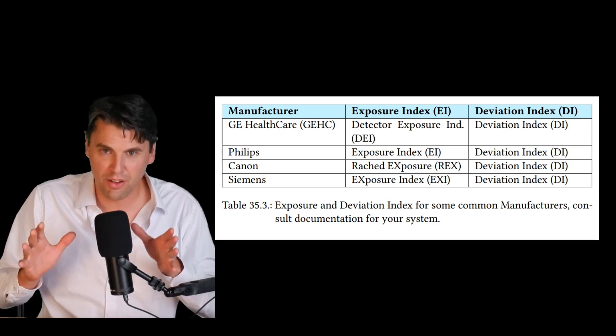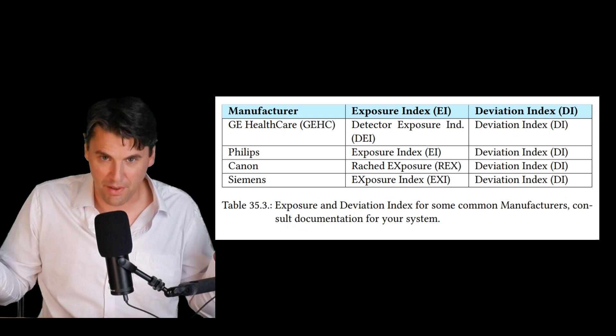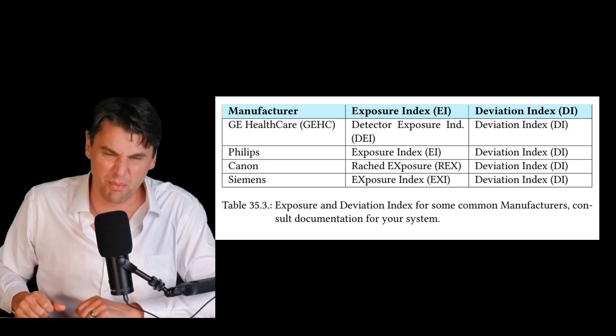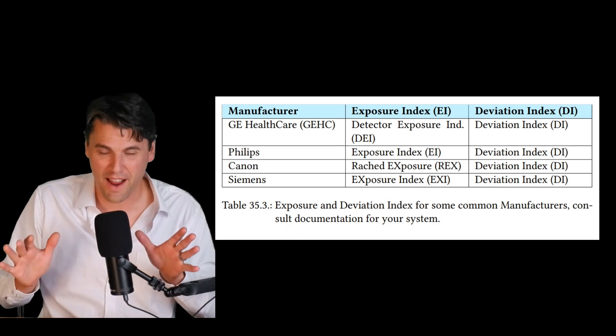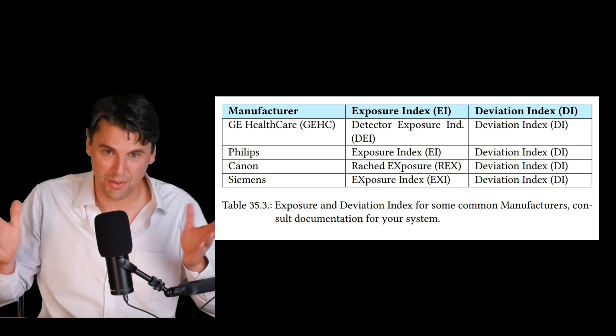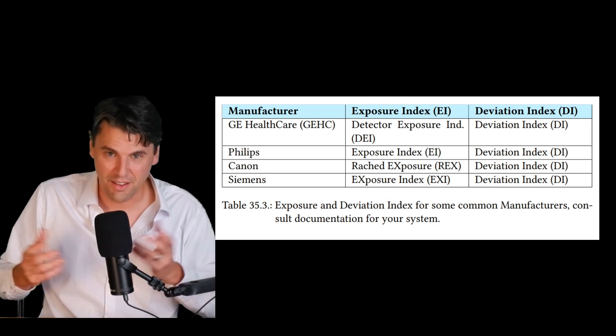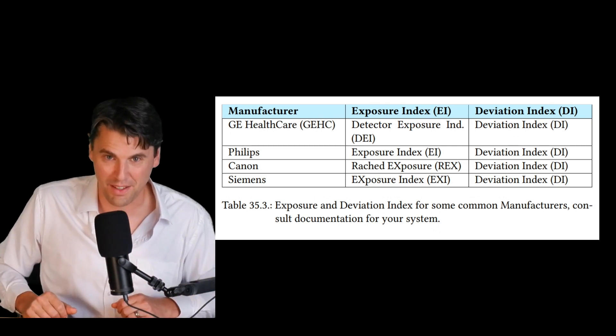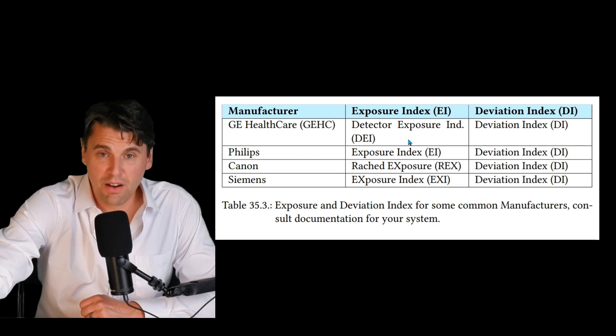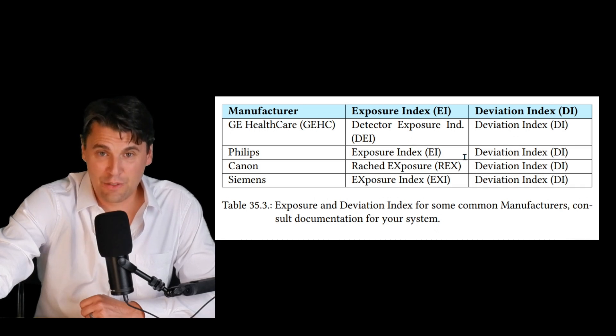Given that, the vendors all decided to make their own separate names, such that it would be nice and simple for you as a technologist to keep track of this. Instead of using just one naming convention, they've chosen to use separate naming conventions. GE Healthcare, it's called the DEI. That focuses on the fact that it's the detector exposure index. Philips just uses the exposure index.